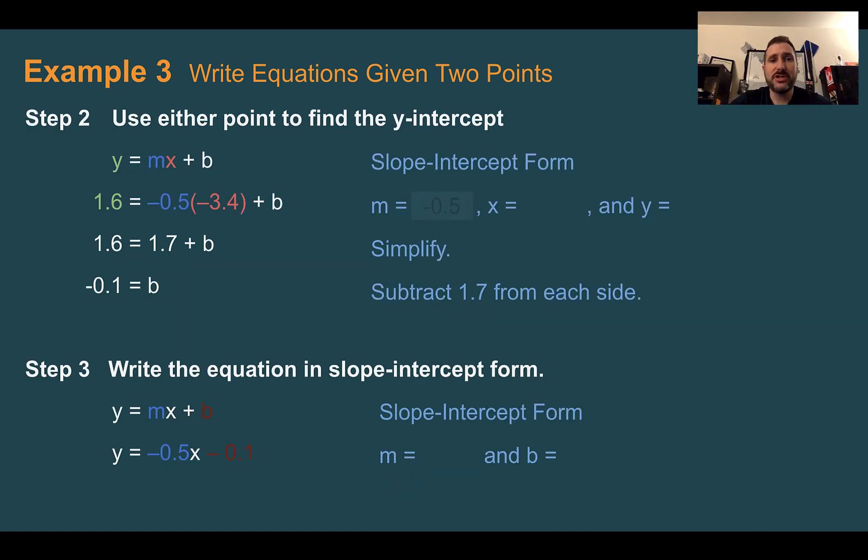Now that we know our slope, which was negative 0.5, we can take either of the points that they gave us and plug them in to find our y-intercept. So they chose to use the point (negative 3.4, 1.6), but we could have used the other point as well and we would have got the same answer. So solving for b, first multiply these out. Negative 0.5 times negative 3.4 is positive 1.7. Again, just use a calculator to do that part. Next, to solve for b, I'm going to subtract 1.7 from each side. So I end up with b is equal to negative 0.1. Now that I know my slope and my y-intercept, I can just plug in negative 0.5 for m and negative 0.1 for b. And that is my slope-intercept form through two points.